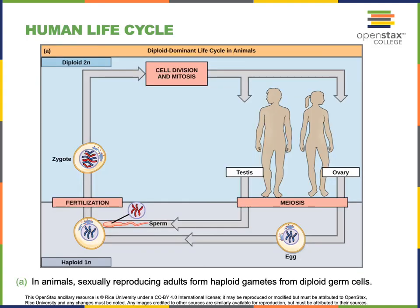The major function of the reproductive system is to produce the next generation, to produce offspring. The process of reproduction involves two different kinds of cell division. Meiosis, or meiotic cell division, produces the sperm and the egg. Sperm are also known as spermatozoa and the egg is also known as an ovum. The sperm are the male gametes and the ovum or eggs are the female gametes. Gametes are haploid cells, meaning they only have 23 chromosomes — only one copy of each of the 23 chromosomes.